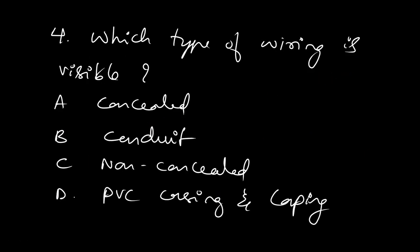Which type of wiring is visible to the naked eye? Non-concealed. In concealed wiring, you don't have PVC casing and capping visible. In conduit, the pipe contains the wires, but the wires are not visible. Non-concealed means the wire is visible.